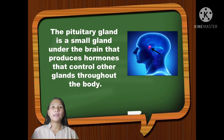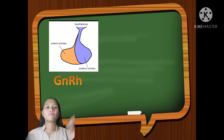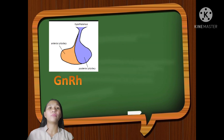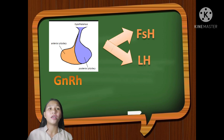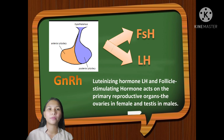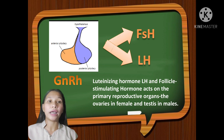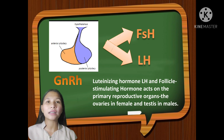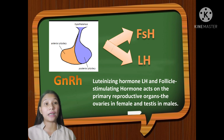The pituitary gland is a small gland under the brain that produces hormones that control other glands throughout the body. The release of gonadotropin hormone from the hypothalamus triggers the release of two puberty hormones at the pituitary gland: the luteinizing hormone (LH) and the follicle-stimulating hormone (FSH). These act on the primary reproductive organs — ovaries in females and testes in males.